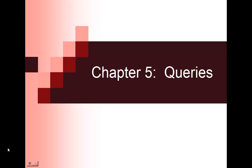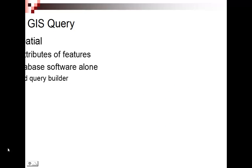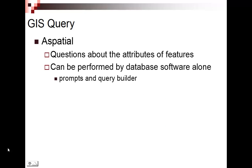I want to make sure we get them down correctly because we can start to make compound queries, which I'm going to look at at the end of the next chapter. One of our key elements of GIS is to analyze spatial data, and that's one of the big things that differentiates it from a traditional information system. We still need to talk about the method and mode by which we do this for non-spatial data — the tabular data. We have aspatial queries.